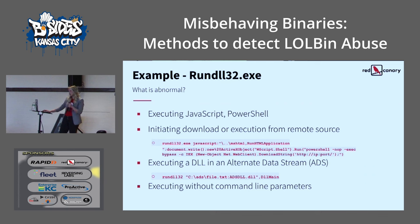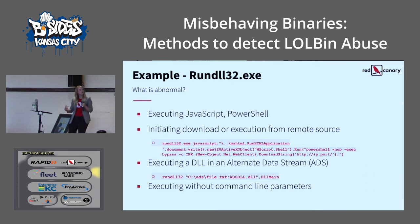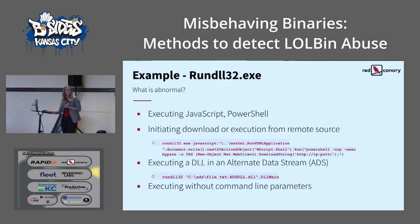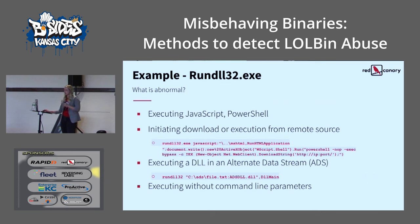Other abnormalities include RunDLL32 executing JavaScript and PowerShell — proxying execution through those processes and initiating a download from a remote source. For example, calling JavaScript to call PowerShell to download something from a random IP/port combination. RunDLL32 can also execute a DLL in an alternate data stream: a text file with a DLL referenced inside calling DLLMain to execute it — looks like a text file, but it's not. And executing without command line parameters is a red flag, since it should always have the DLL name and function.